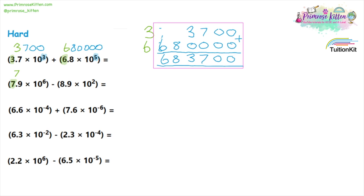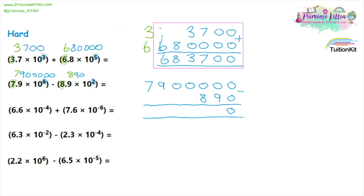Moving on to the next one. We have 7 times 10 to the 6, which means we start with 7 and there are going to be six digits after it. The first of these extra digits is going to be a 9, and then the rest are zeros. For 8.9 times 10 to the 2, we start with an 8, and then after that there are two extra numbers — the first being 9 followed by 0. We can then line them up and subtract one from another. If you struggle with long subtraction, you can check out my separate video on that.